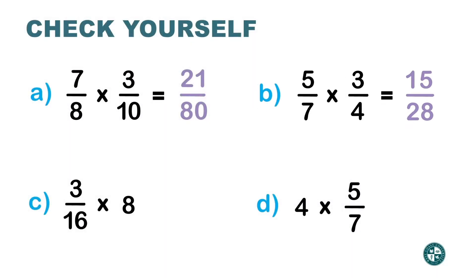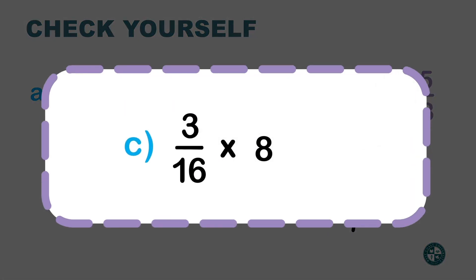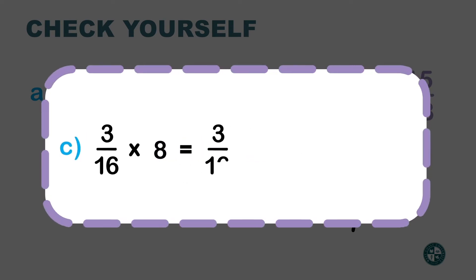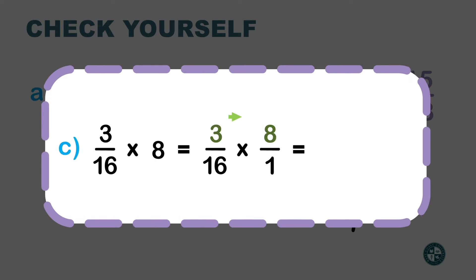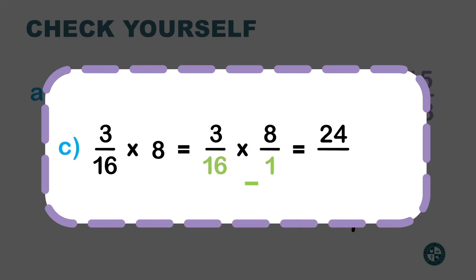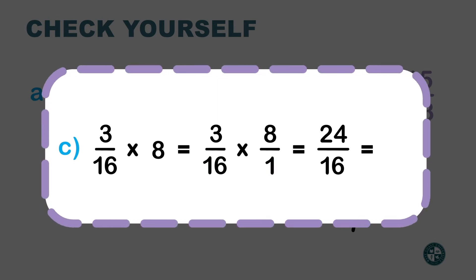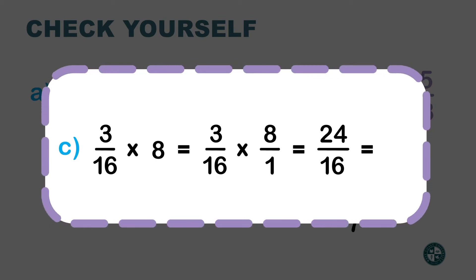Now let's multiply the next one, but here I'm multiplying a fraction by a whole number. We need to write 8 as a fraction, so we write it over 1. 3 times 8 is 24, and 16 times 1 is 16. Can we simplify? Yes — 8 can divide both 24 and 16. 24 divided by 8 is 3, and 16 divided by 8 is 2.